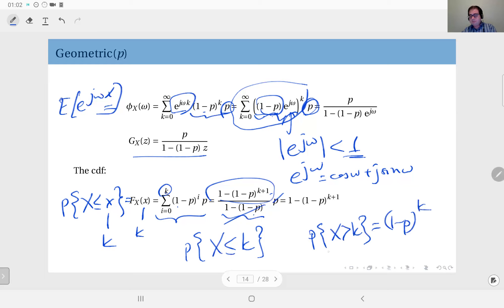Right, since the first success is beyond k—it's not within the first k—the first k trials must be fails. So the probability for that is 1 minus p to power k.